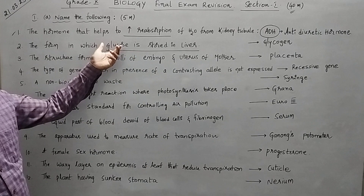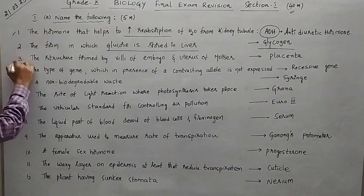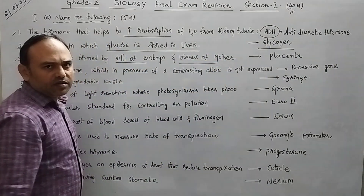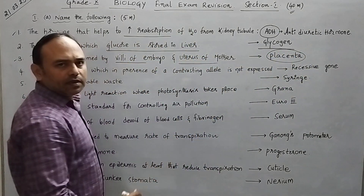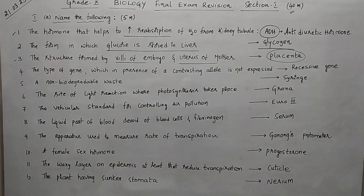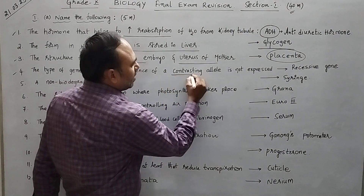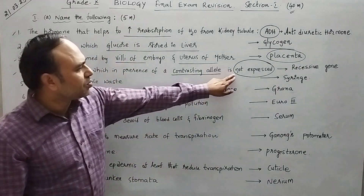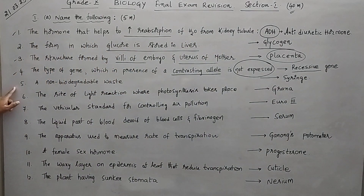Third one: the structure formed by the relay of the embryo and the uterus of the mother. That structure is the placenta — worth one mark. Fourth question: the type of gene which, in the presence of a contrasting allele, is not expressed. Any gene which is not expressed is called a recessive gene.